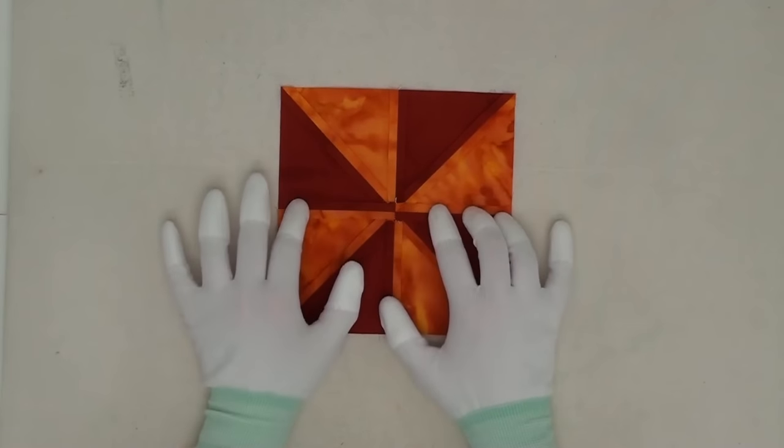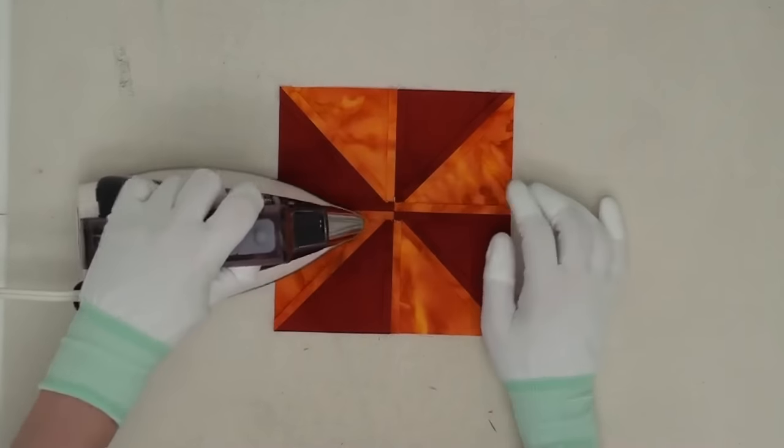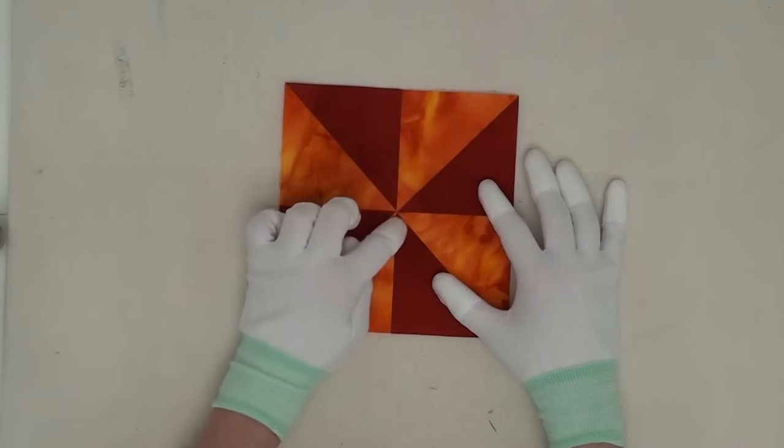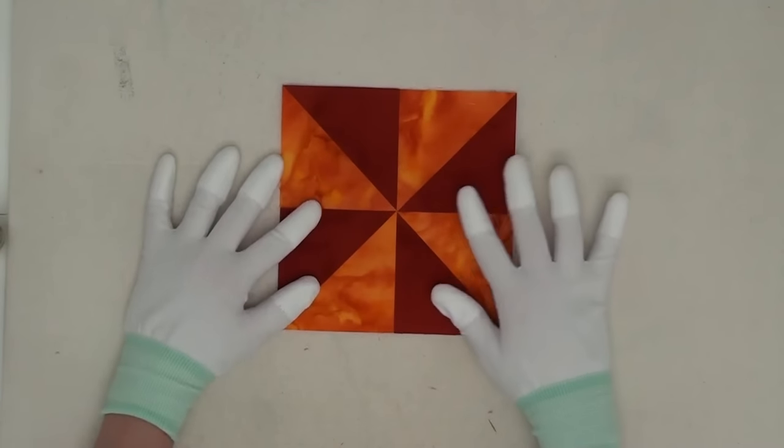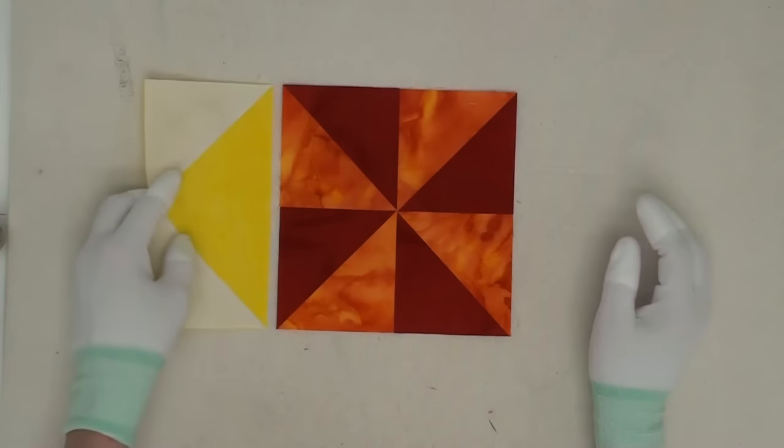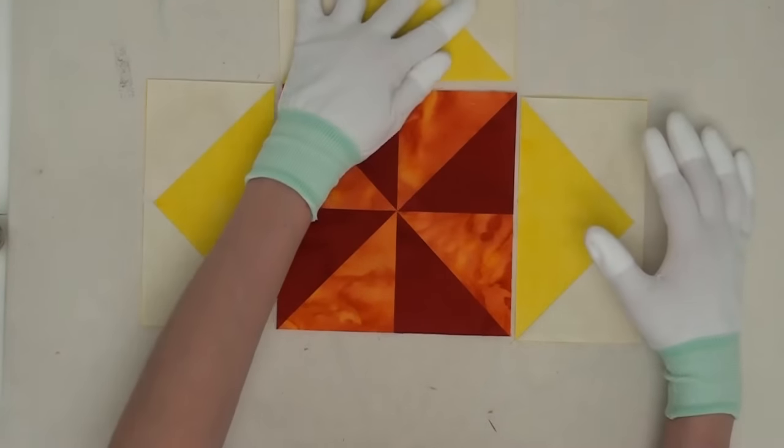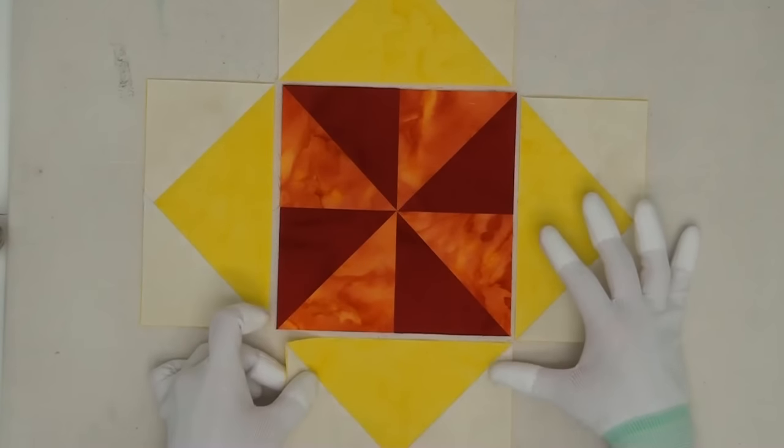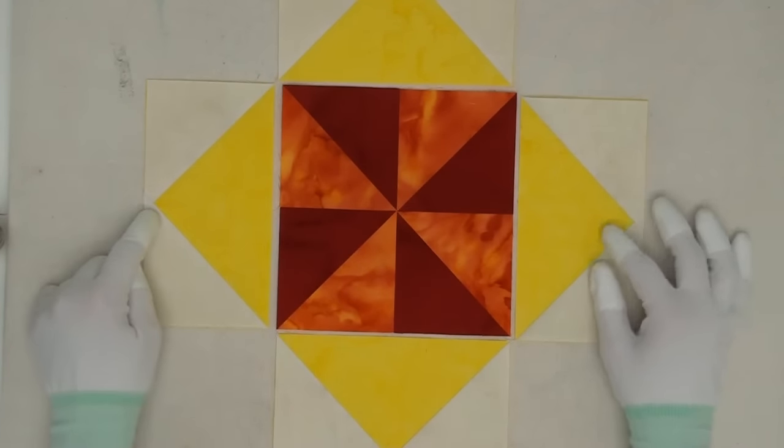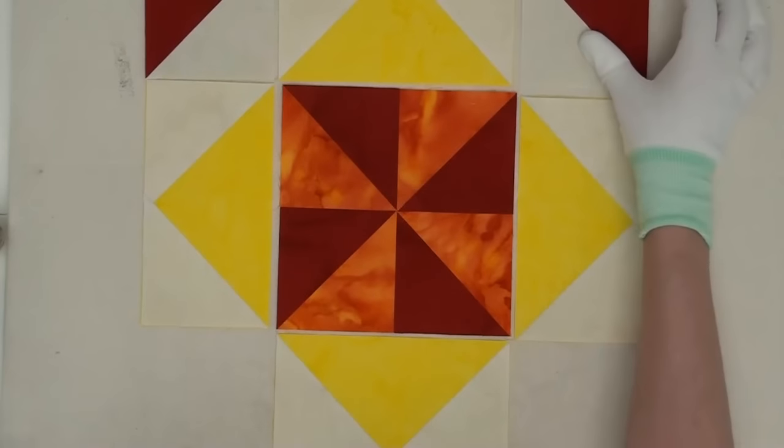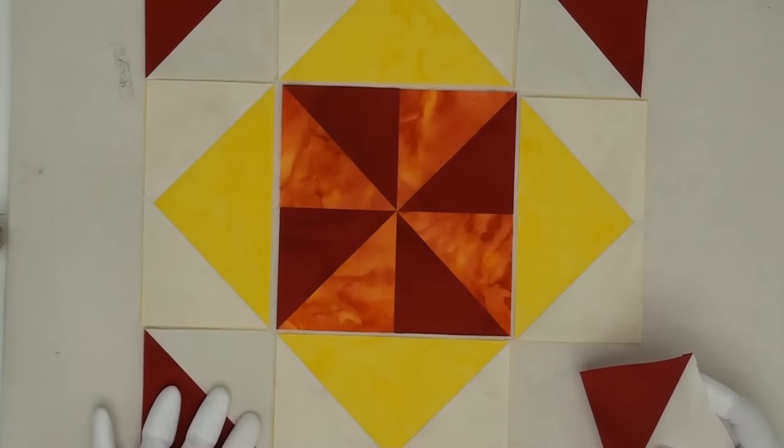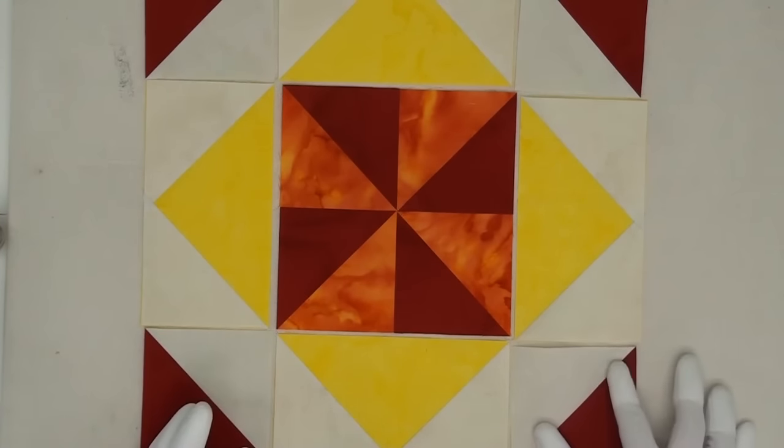The next step is to finger press and open up that seam allowance on your pinwheel block. Give it a good press. But whenever you flip it over be careful when pressing over this area because you can get some marks and lines from pressing over an area with lots of seam allowances. That is the center of our block and now we can add our units together to create our block layout. We're going to place our flying geese units to the sides, top and bottom, and you want to place these so that the flying geese unit, the yellow point, is pointing outward so that way you get this beautiful diamond effect. Then the next step is to place your half-square triangles in all of the corners. For these you want the red triangle pointing outward.